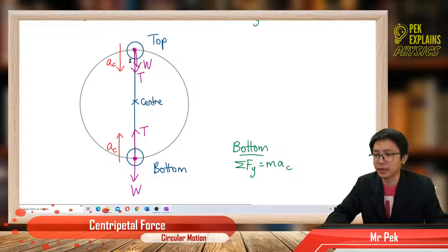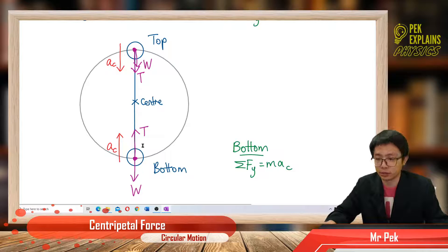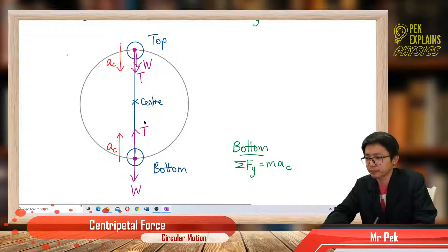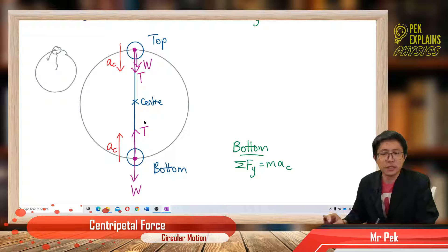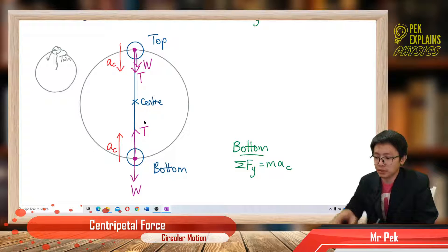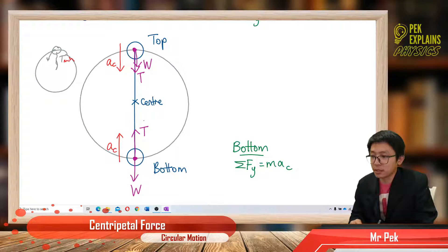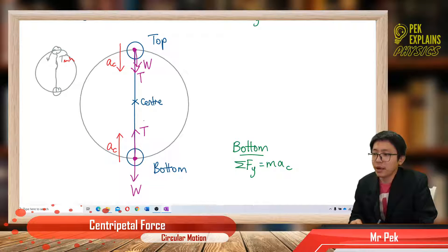There are only two positions which are important in vertical circular motion: the top and the bottom. You can imagine: when the object travels to the top, the string is a bit loose — it's almost like it's going to fall down. So the tension here is not high. Normally at the top is minimum tension. But at the bottom, as the ball travels downward, this part has the highest tension — the maximum tension.